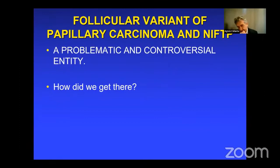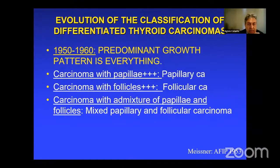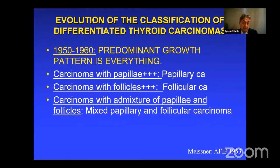Now let's start with changes that have significant impact on patients. Let's begin with the follicular variant of papillary carcinoma and its associated lesion, NIFTP. I'll take you through the history of the classification of thyroid carcinoma to show how we got here. The story starts in the 1950s. At that time it was easy: if the tumor had papillae, you called it papillary carcinoma; if it had follicles, follicular carcinoma; a mixture was called mixed papillary and follicular carcinoma.